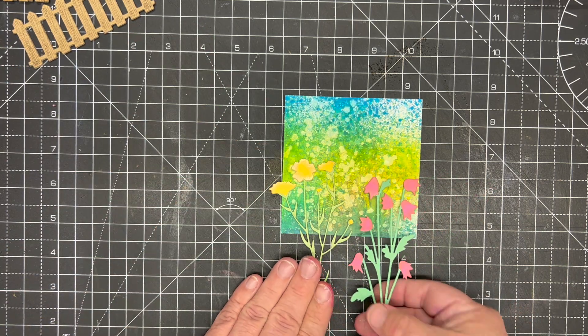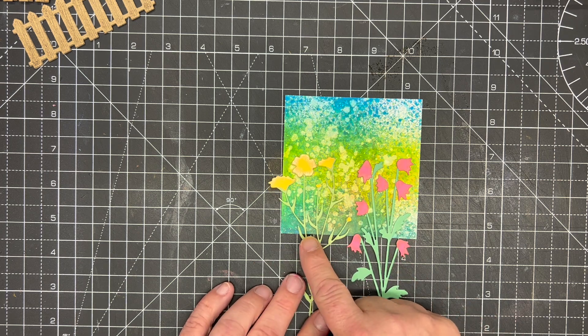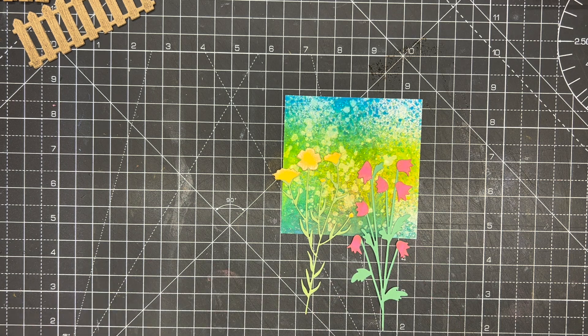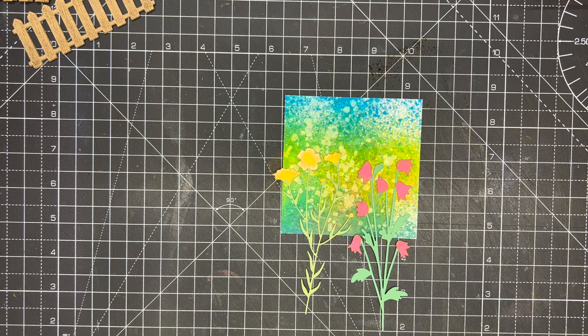So here I have the bluebells and here I have the willow herb, really simply cut, simply made. And you can add other flowers into this to give you a different effect.